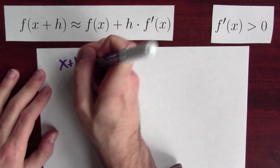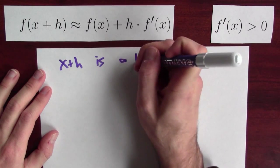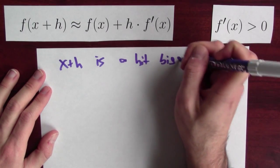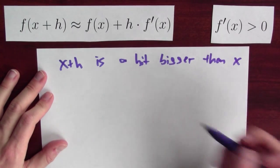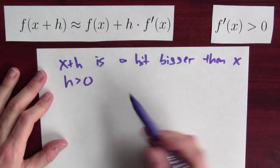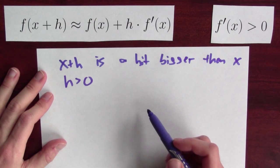Now let's suppose that x plus h is a bit bigger than x. Well, what that's really saying is that h is positive, right? I shift the input to the right a little bit.